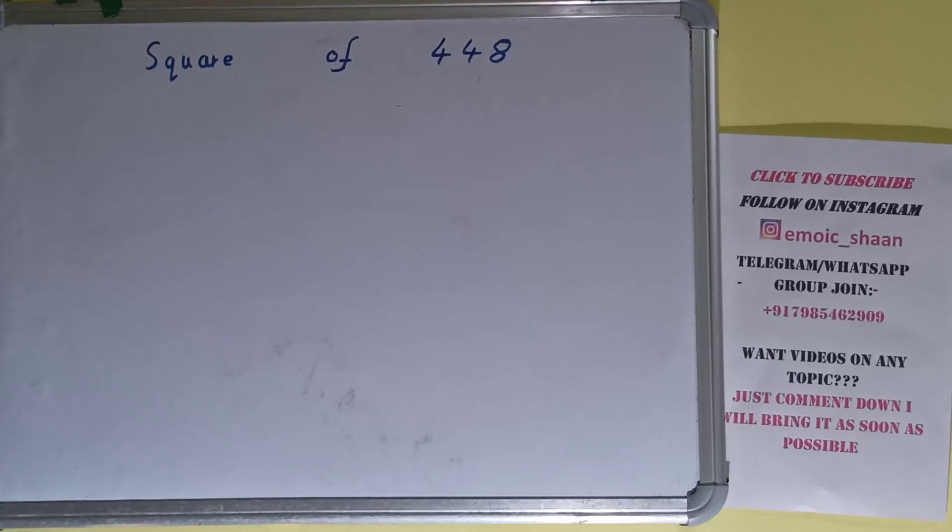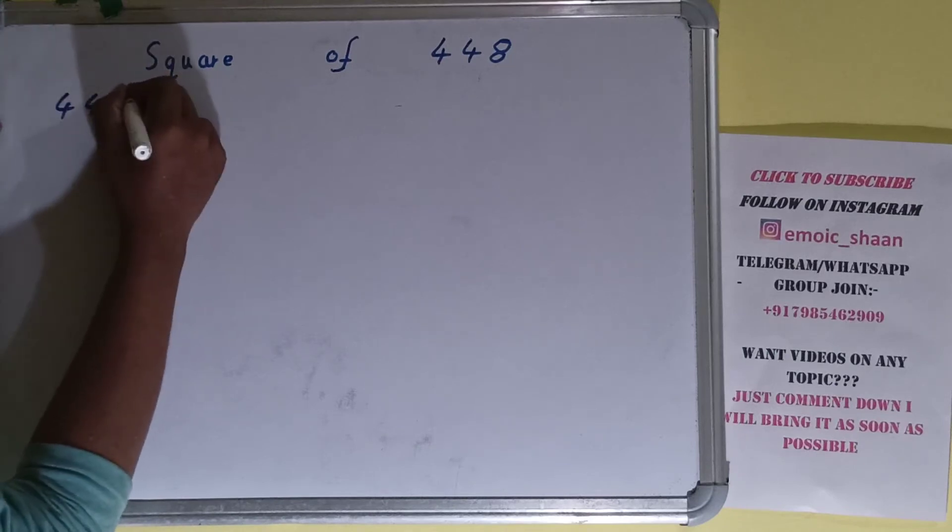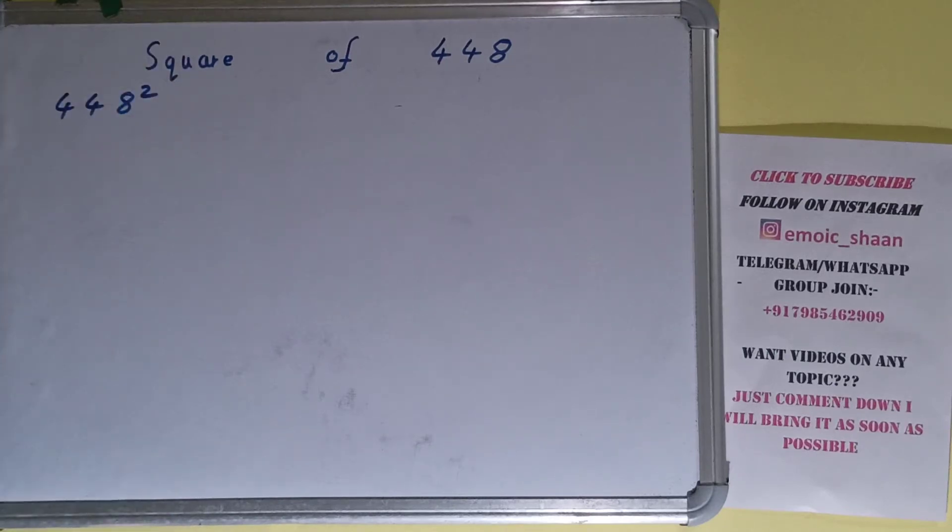Before solving this, let me tell you square of 448 can also be written as 448 raised to the power 2. Now moving on to the solution, square basically means multiplying the number by itself.